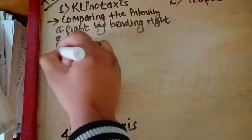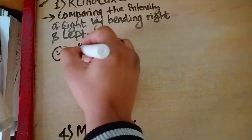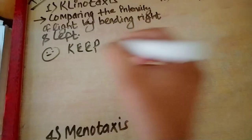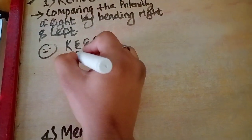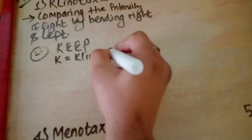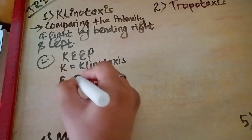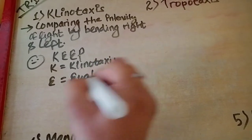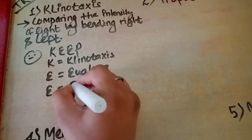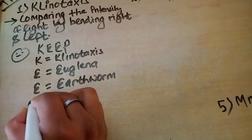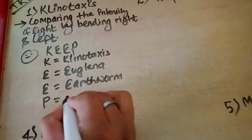The example trick is K-E-E-P. K means klinotaxis, the first E means Euglena, the second E means earthworm, and P means planaria.